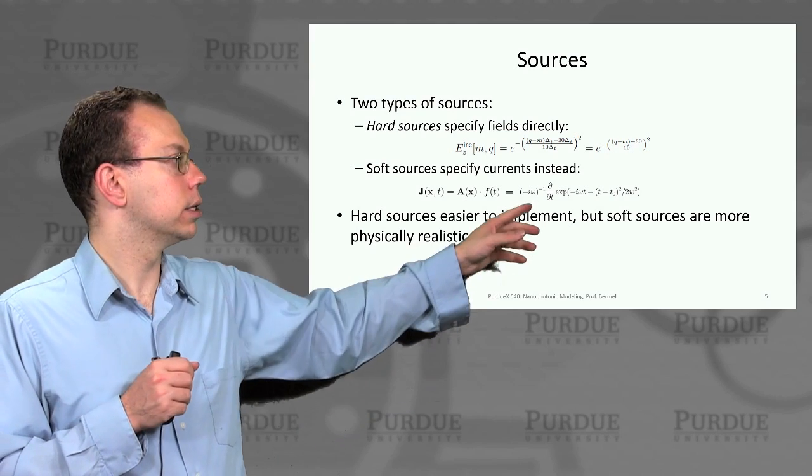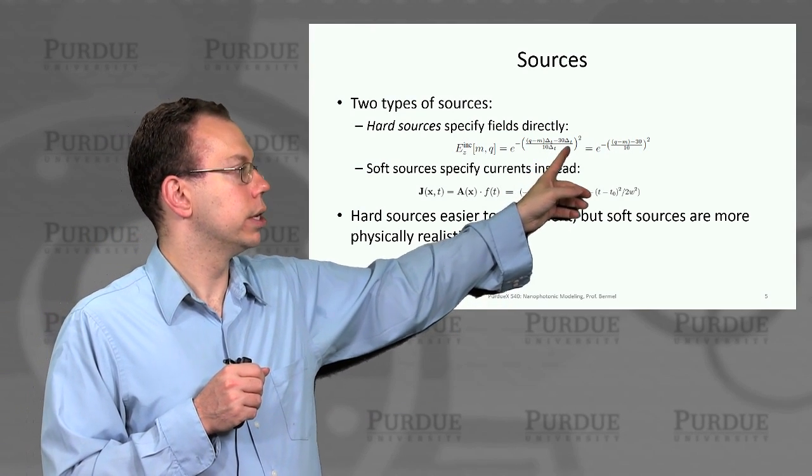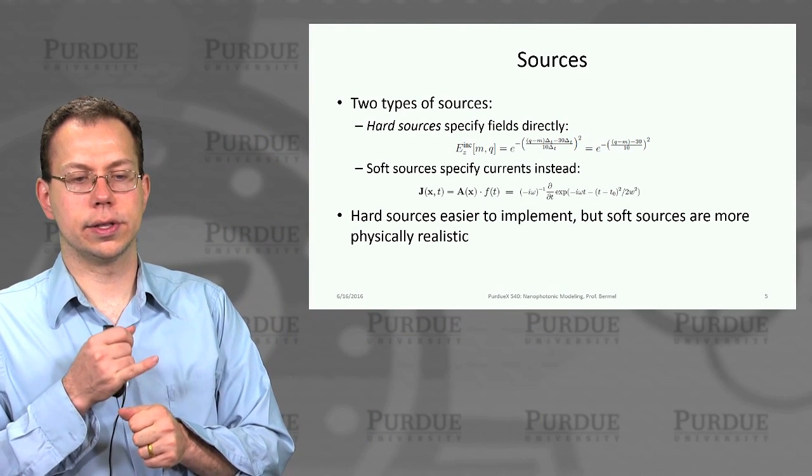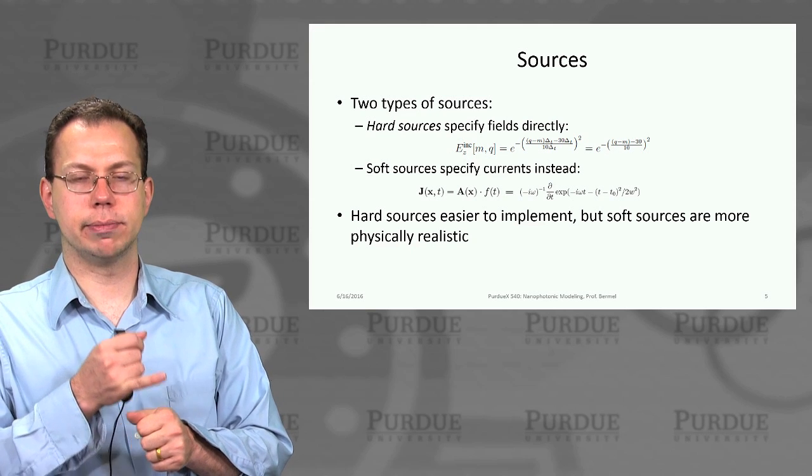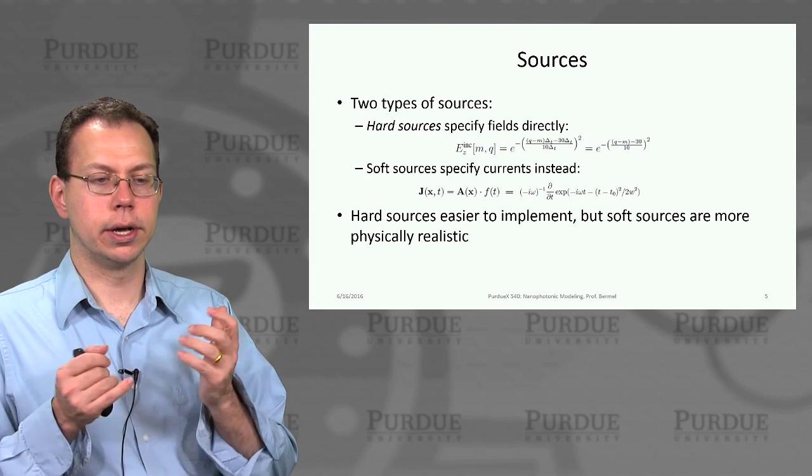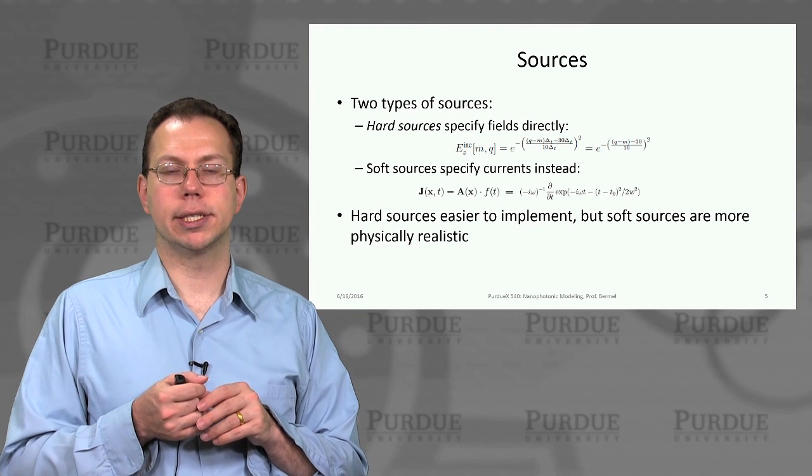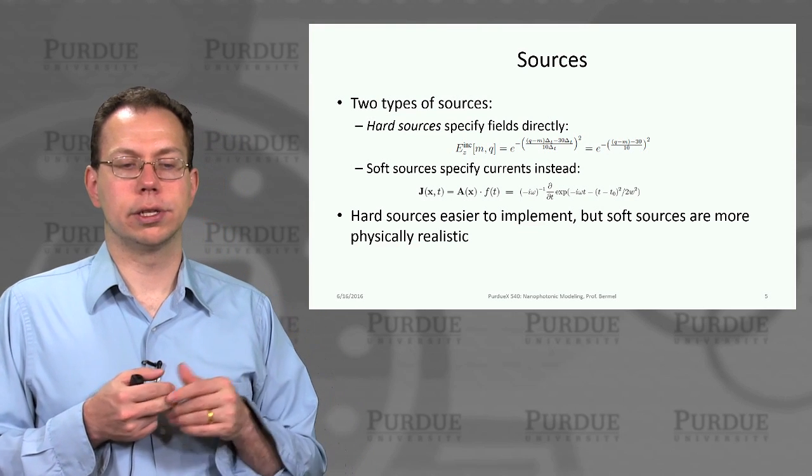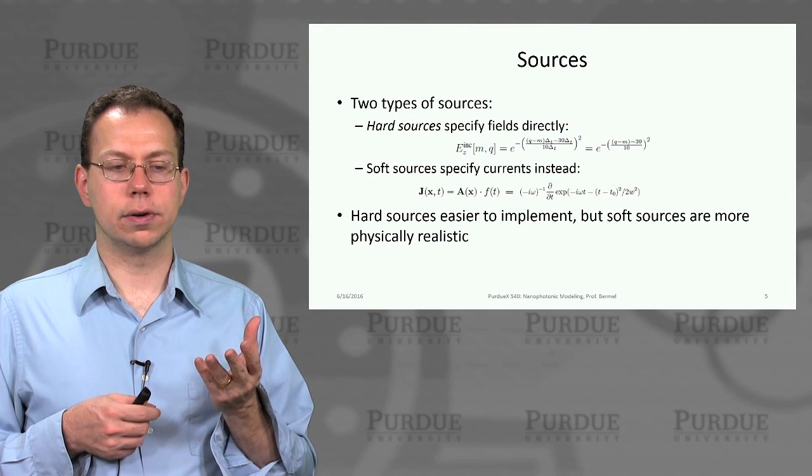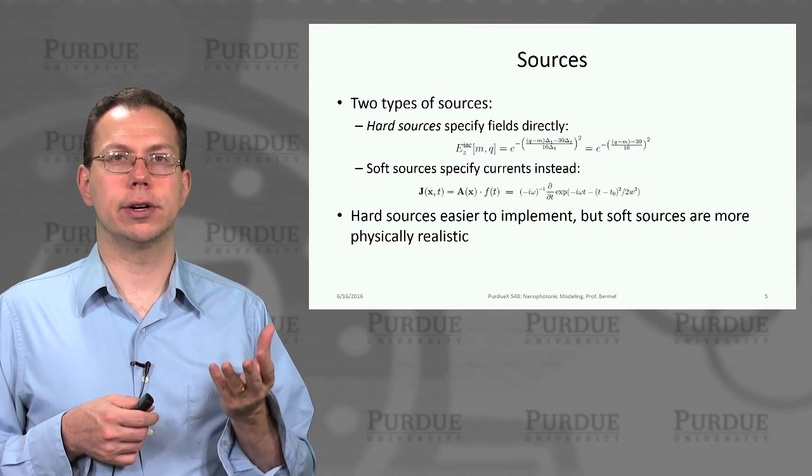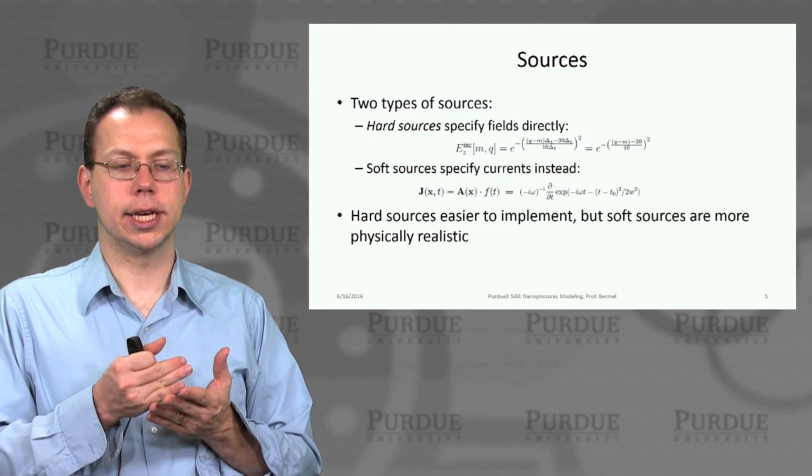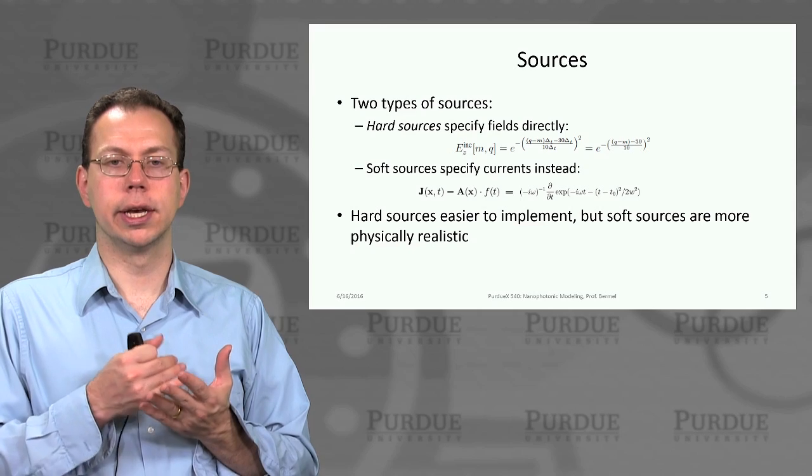So this is basically an example of what we could write down. And then we have to discretize this on the lattice. So this is an analytical equation, but it's implemented as a whole bunch of discrete points with different E_Z values. Now, unfortunately, there can be some stability challenges with that. So although it's easy to write the code for that, it doesn't always work as well when you run the simulation. So oftentimes, it's more accurate and also more physically reasonable to specify a current.